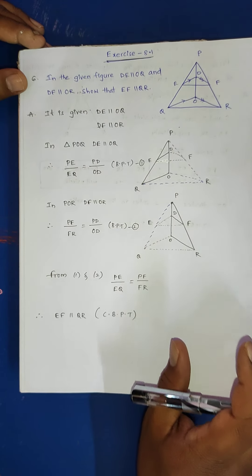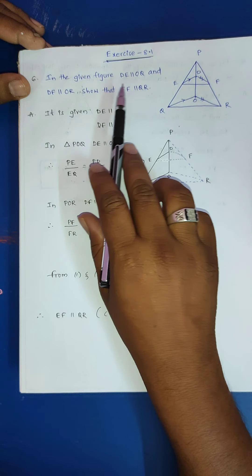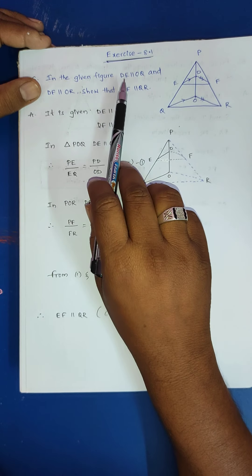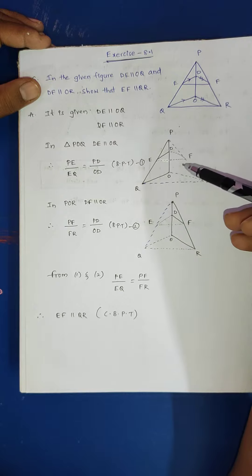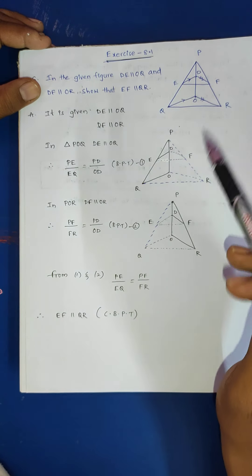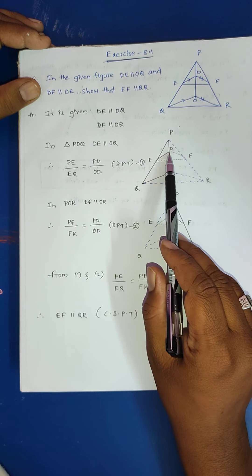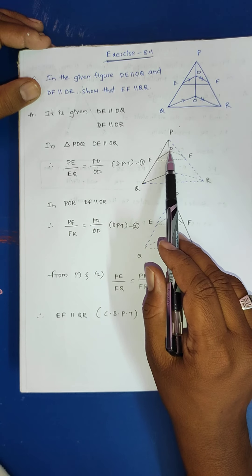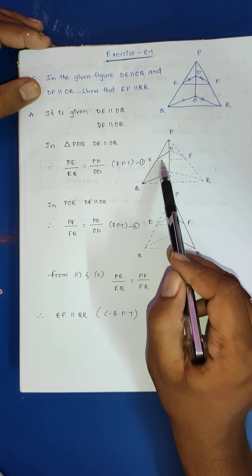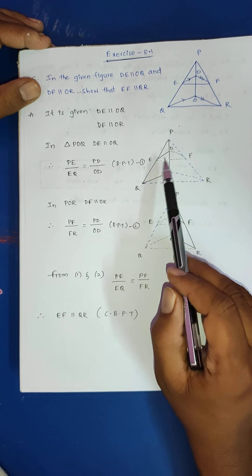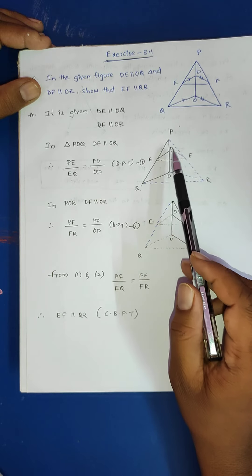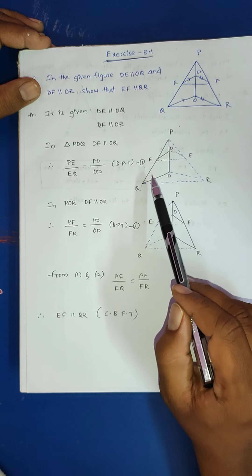Next, sixth problem. In the given figure, DE is parallel to OQ and DF is parallel to OR. Prove that EF is parallel to QR. For each condition I draw a separate figure. In triangle POQ, DE is parallel to OQ. So PE by EQ equals PD by OD — using the basic proportionality theorem.